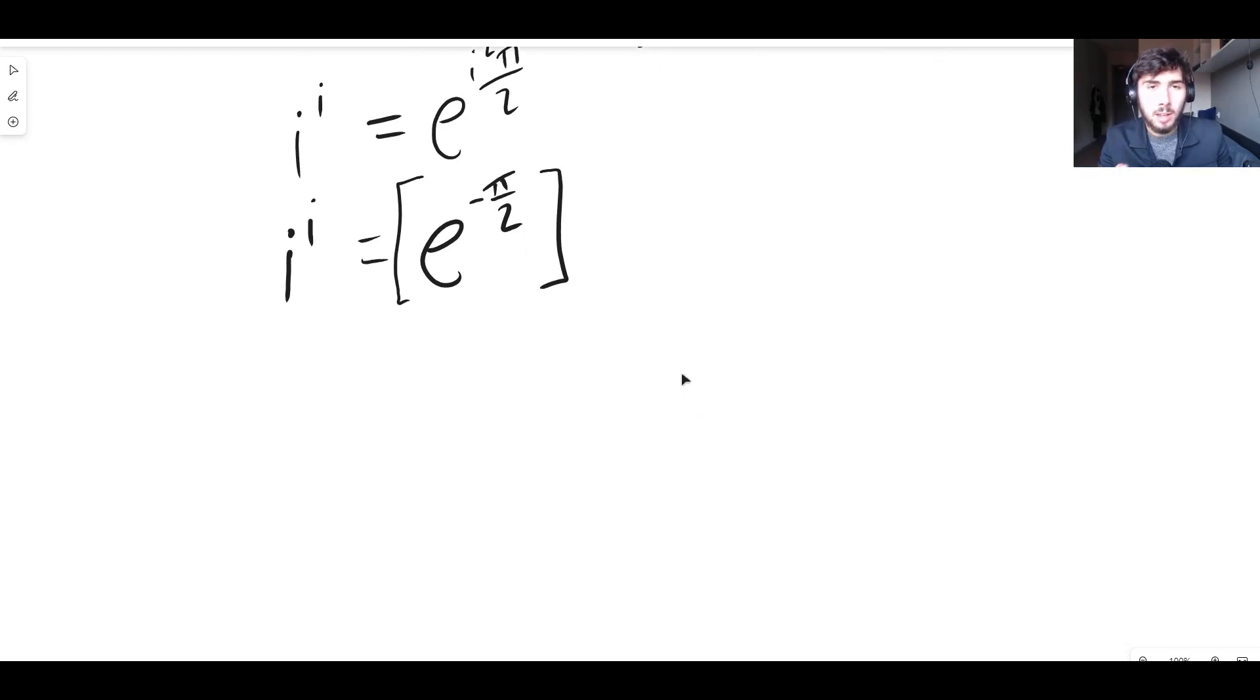And just if anyone was curious or if anyone knows this maths already, I understand that there are multiple values for i to the i, I've got it. And maybe I'll talk about that in another video. There are actually an infinite number of values for i to the power of i, but we would call this the principal value or the principal result.